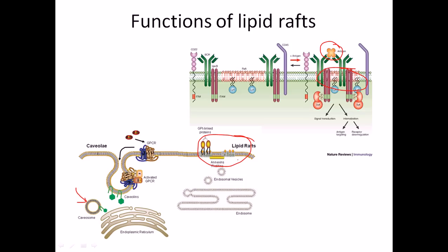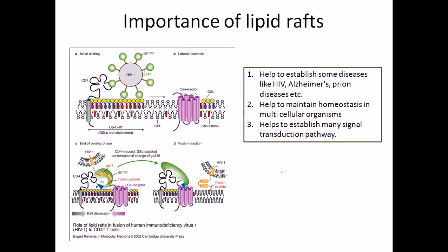That is how the endocytosis process is mediated by lipid rafts. Lipid rafts are regions which normal cells make with the help of specialized phospholipids and proteins to properly carry out specific functions. Regarding their importance: first, they help in signal transduction pathways; second, they help maintain homeostasis in multicellular organisms because they are both rigid and dynamic in nature.